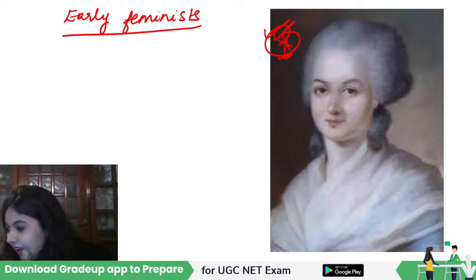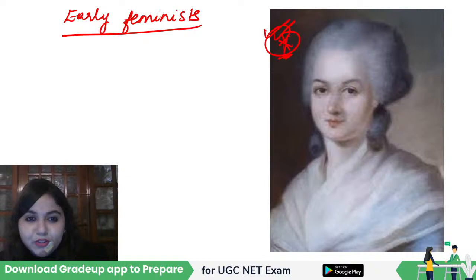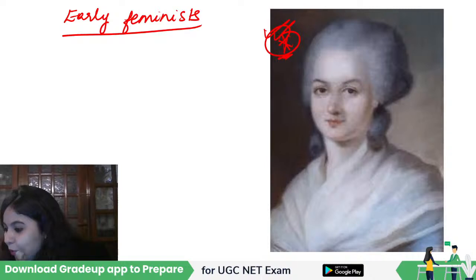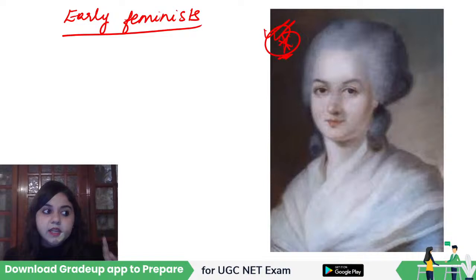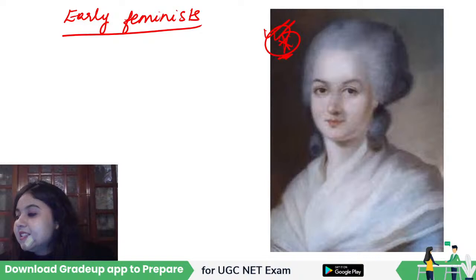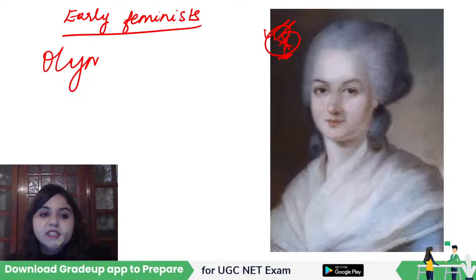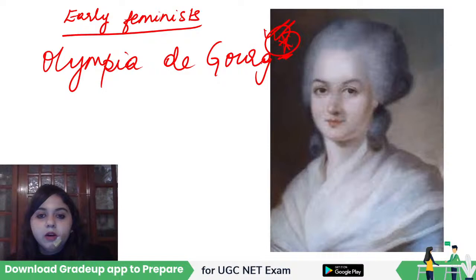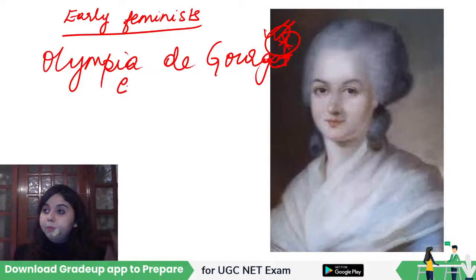This is actually Olympe de Gouges. Olympe de Gouges was one of the first eminent feminist writers talking about women's equality — how women need to be educated, how women need to be made compatible to the learning that men are acquiring, and not considered as second-class citizens. She was a playwright and a political activist, a staunch supporter of the French Revolution, genuinely believing in the radical ideas of liberty, equality, and fraternity.